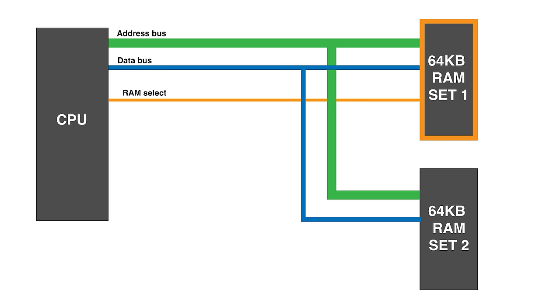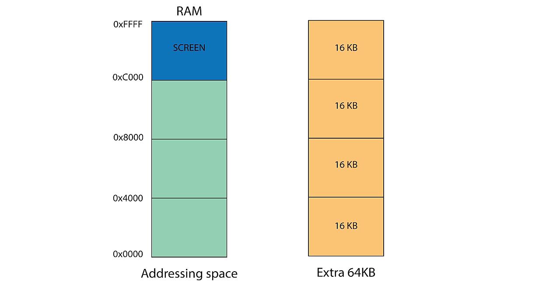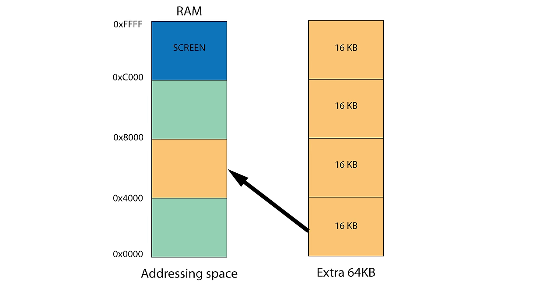The CPU can only address 64KB, but nothing's stopping a clever computer architect from adding a toggle and saying: whenever this is on, the computer accesses those other 64K over there, and whenever it's off, it accesses those over there. So it can use 128K of RAM, but only 64K at a time. What I just described would be the world's worst banking system, because it would swap all memory at once. Instead, banking is usually done in smaller blocks — in the case of the Amstrad CPC and a lot of Z80-based computers, it happened in blocks of 16KB.